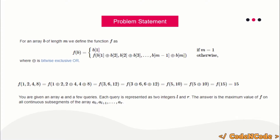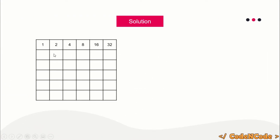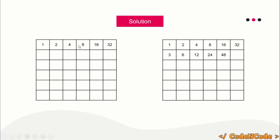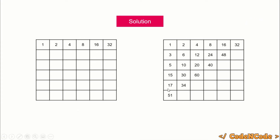Suppose the input is 1, 2, 4, 8, 16, 32. We are going to prepare a grid. If we have n elements we'll have an n×n grid. The first row is the input itself. The second row is formed by taking XOR of adjacent elements. For cell (i, j), it stores XOR of cell (i-1, j) and cell (i-1, j+1). This way we fill the whole grid.